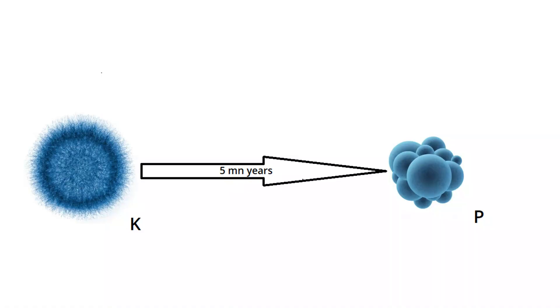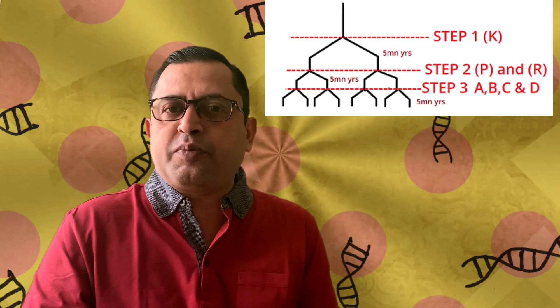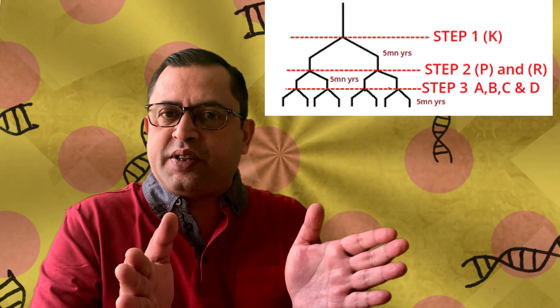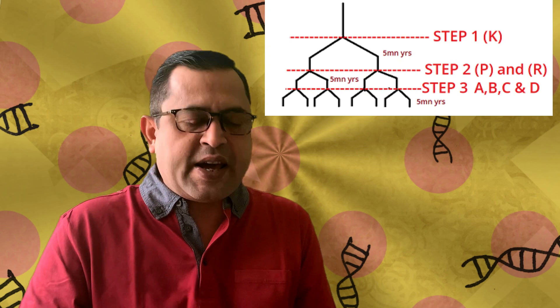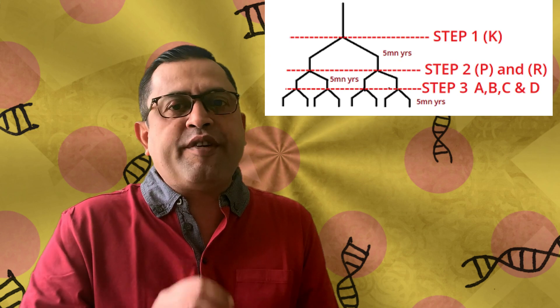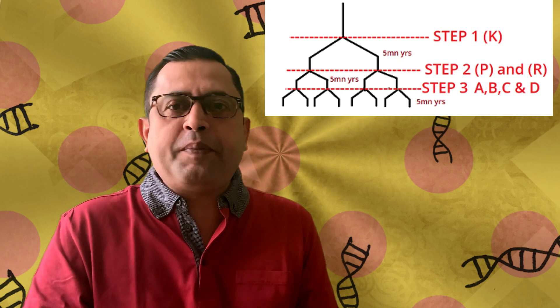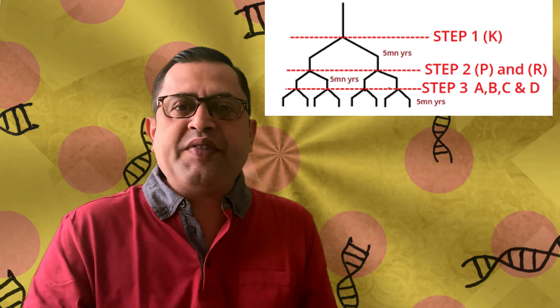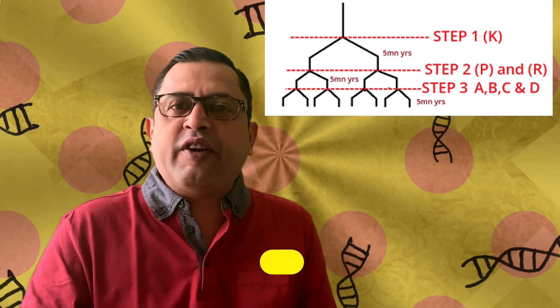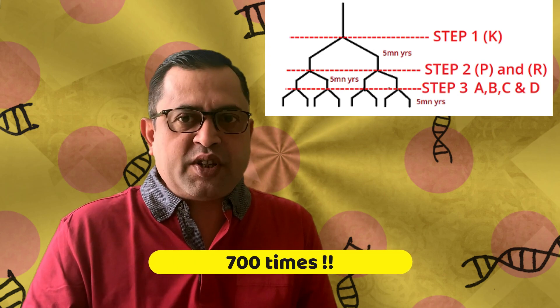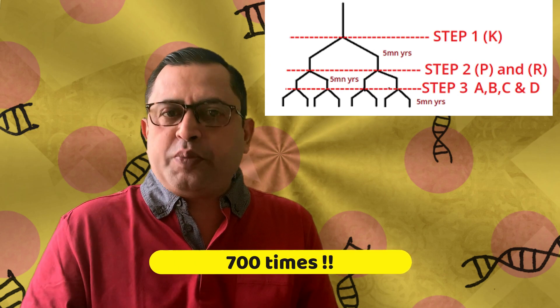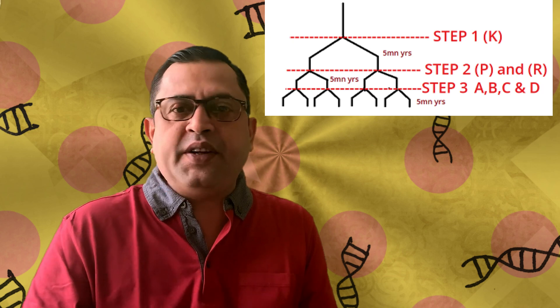Let us assume it takes 5 million years for K to change to a new species P. Every 5 million years this animal splits into two separate species. Now, if we consider the total time of 3.5 billion years, how many branches would K have made? It would have split 700 times, each new species separated by 5 million years.